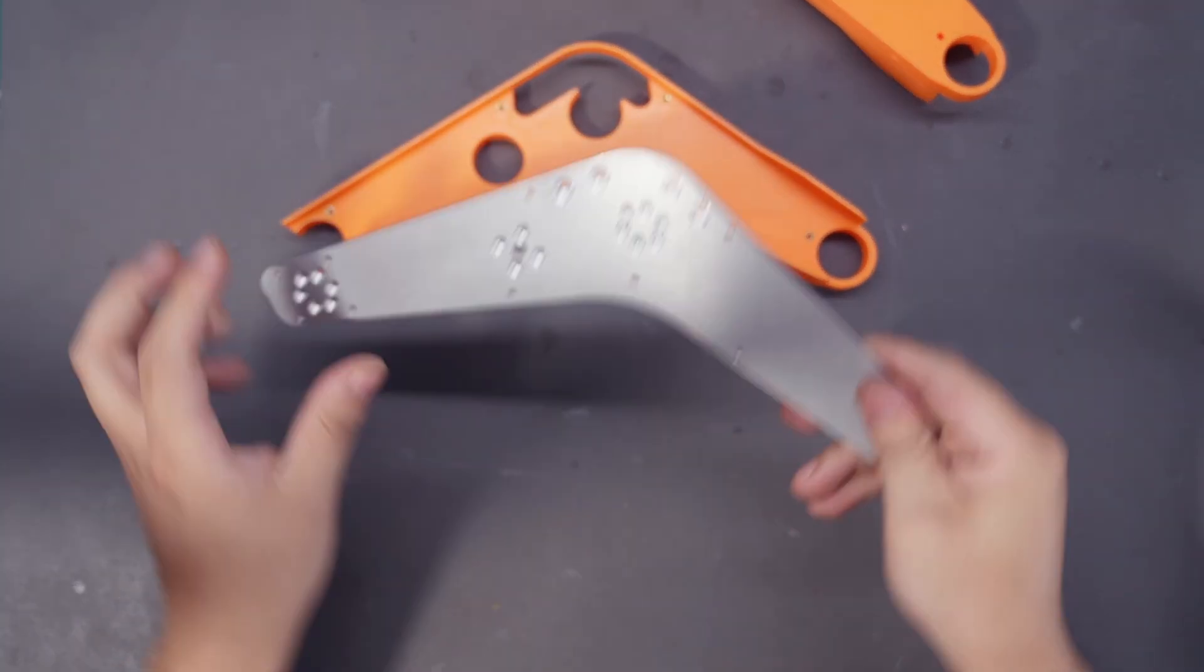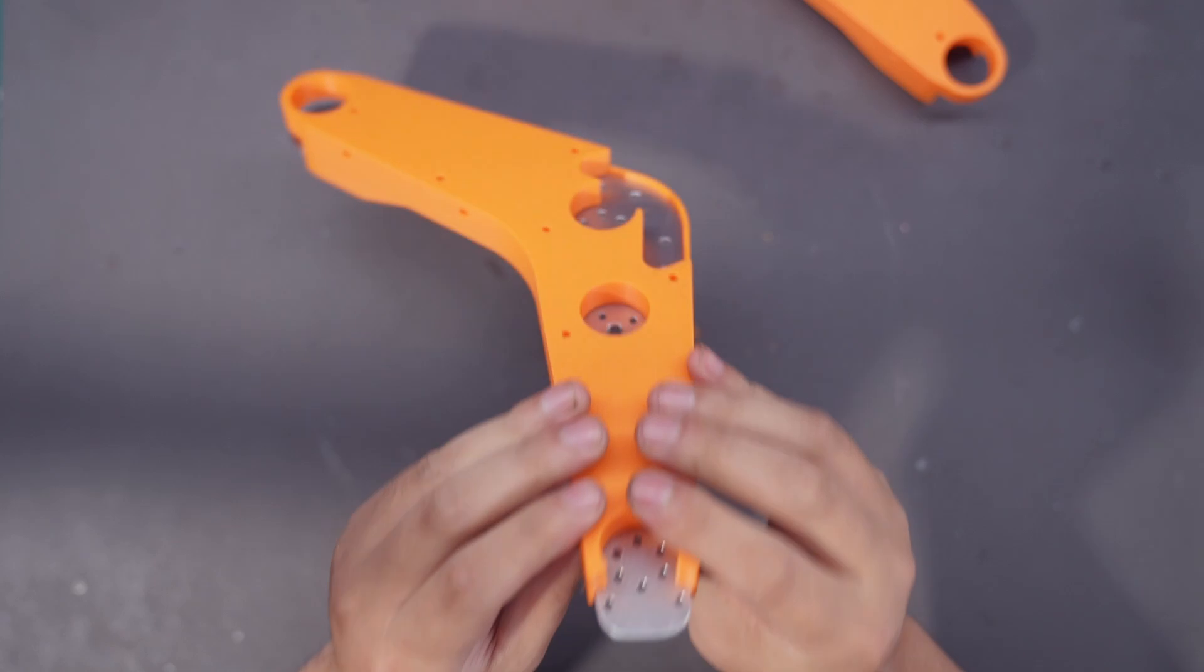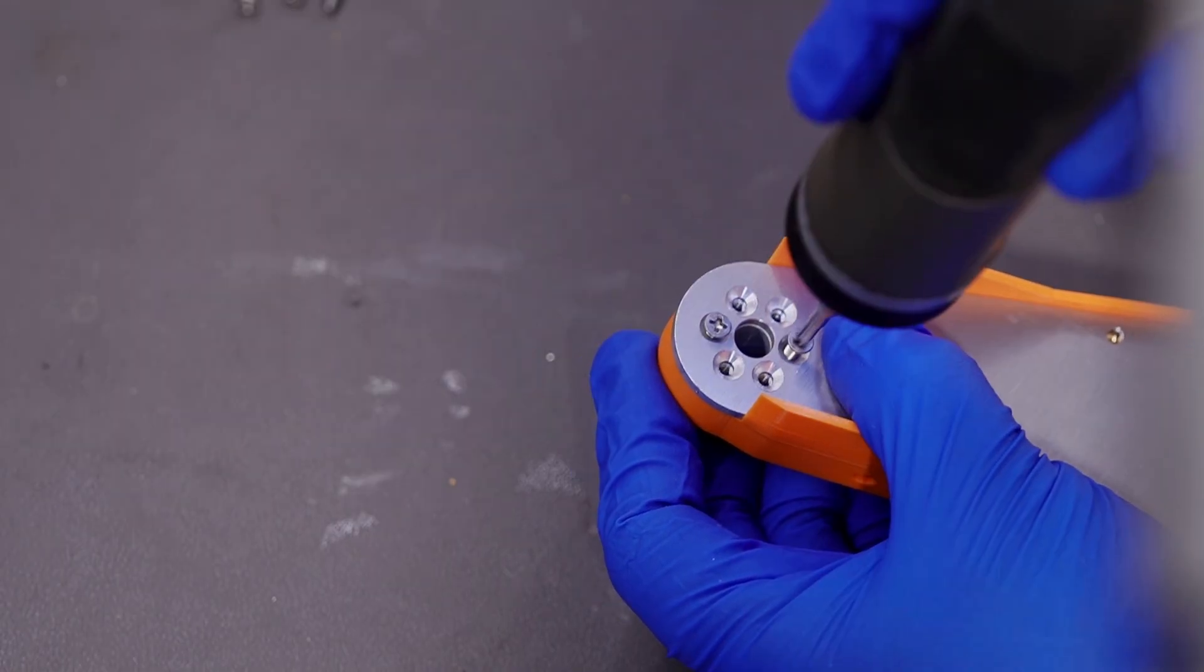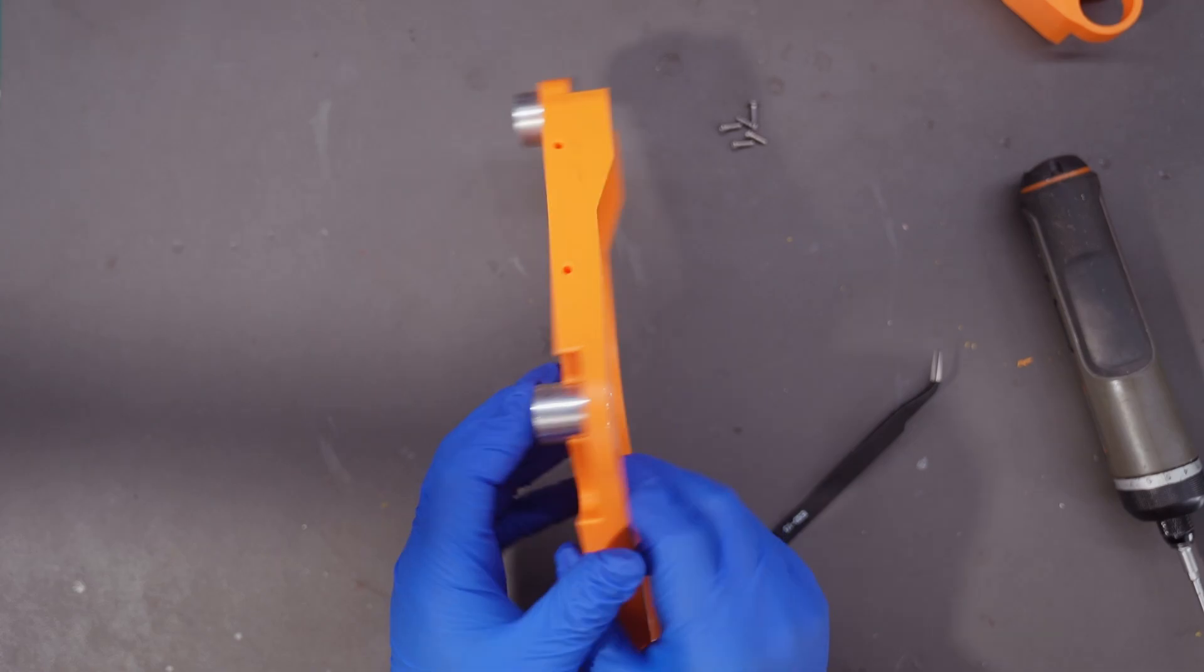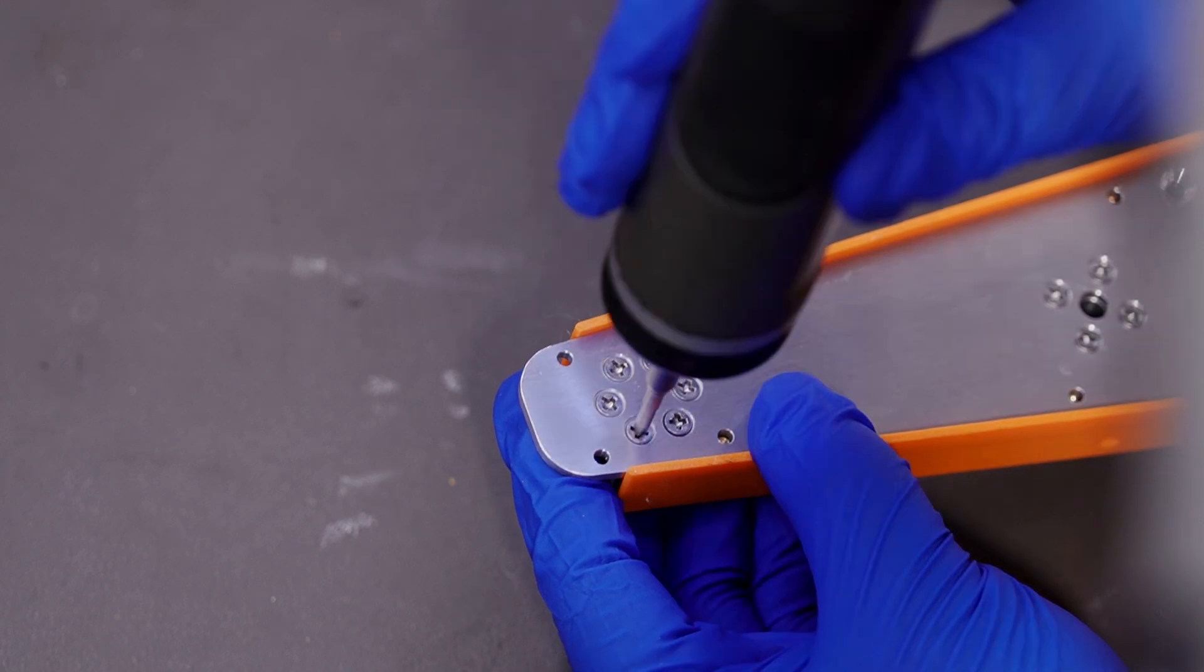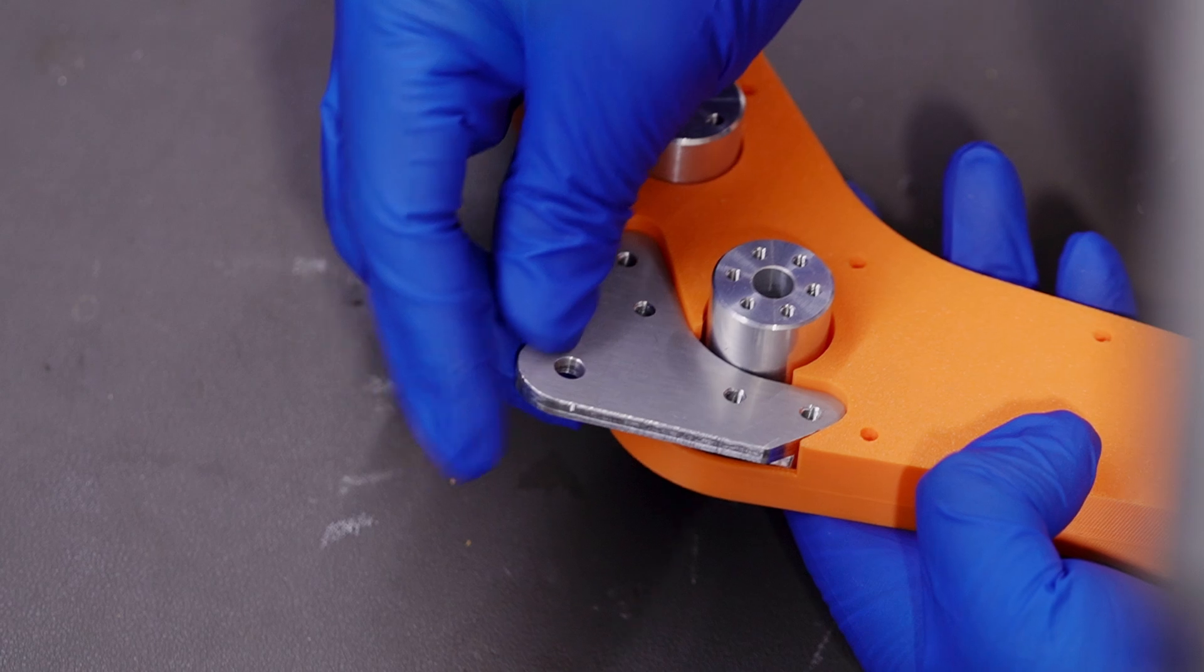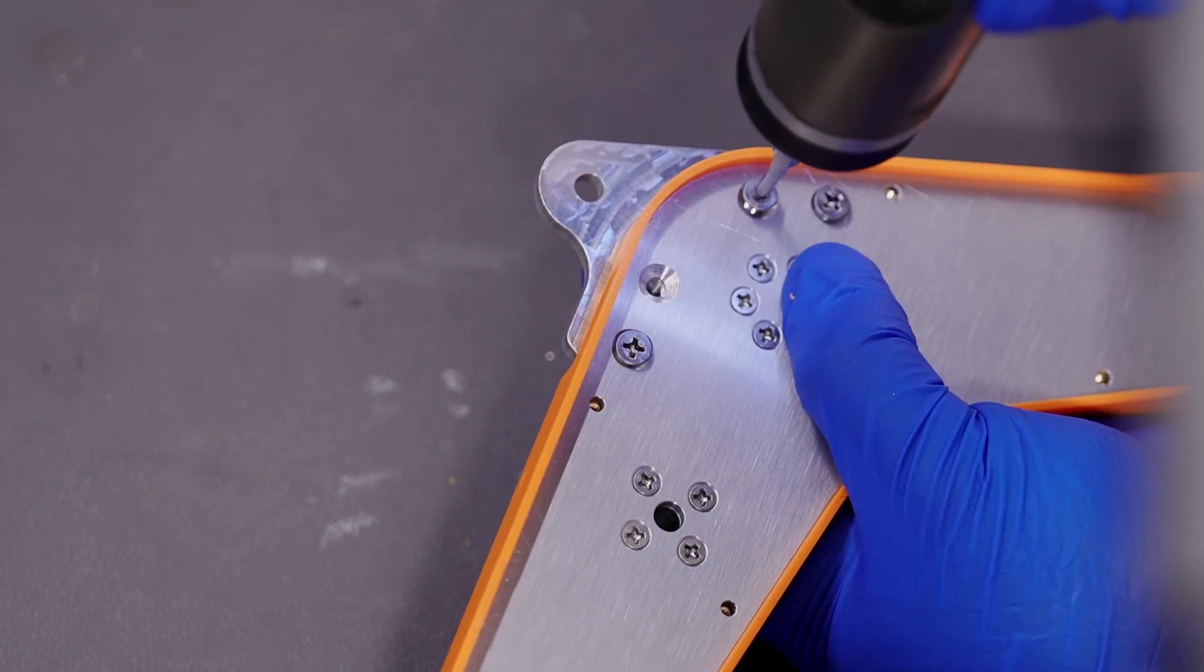The first step is to assemble the boom. I'll combine the aluminum frame plates with the innermost 3D printed parts. Then I'll install the cylindrical connectors and the ears on this side.